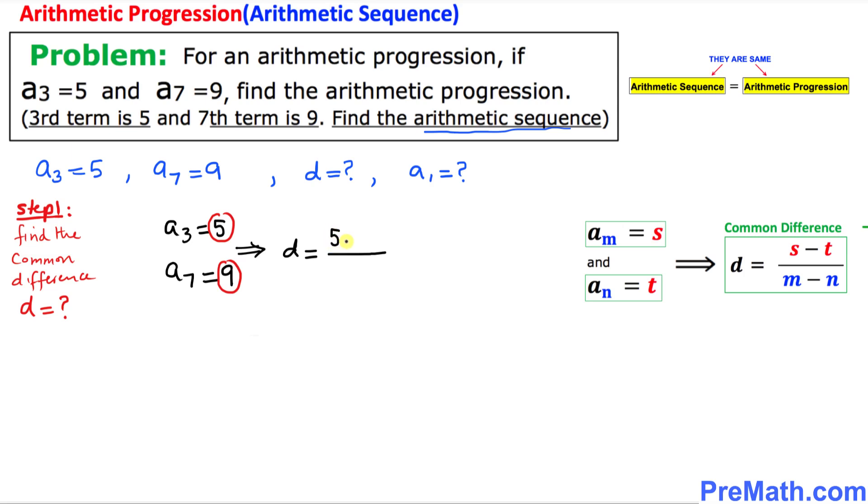I'm going to write down 5 - 9, and at the same time, over here our subscripts are 3 and 7, so I am going to write down at the denominator 3 - 7.